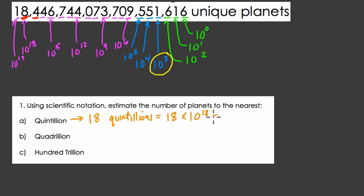To get it in scientific notation, we can divide 18 by 10 to get 1.8, and multiply 10 to the 18th by 10 to get 10 to the 19th. And this would be our number right here, to the nearest quintillion.